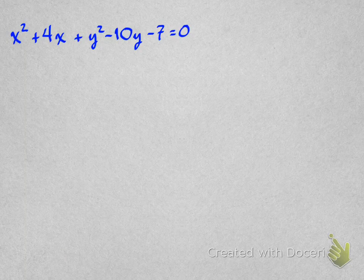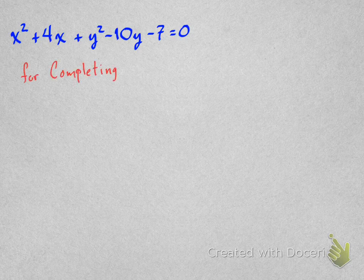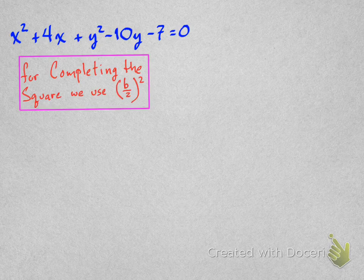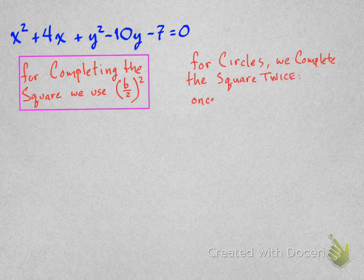Now, as I mentioned on the first slide, what we are going to do to convert this to center-radius form is completing the square. And to complete the square, we use this b over 2 squared number. That's kind of the magic number that makes it all come together, right? And so for circles, what we're going to do is complete the square twice. We're going to do it once for x and once for y.